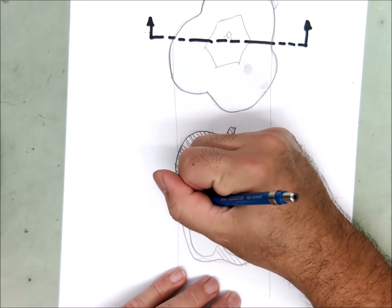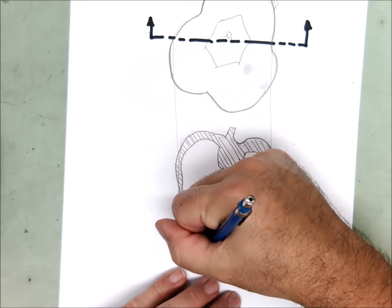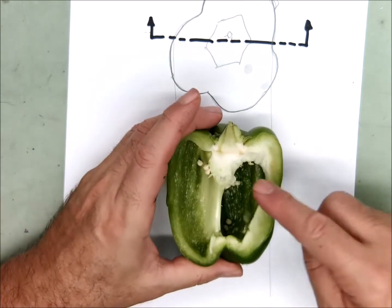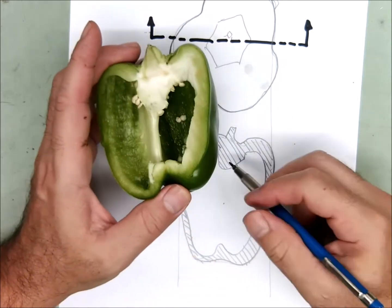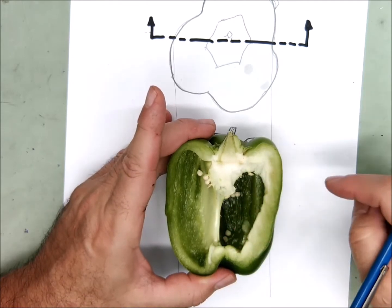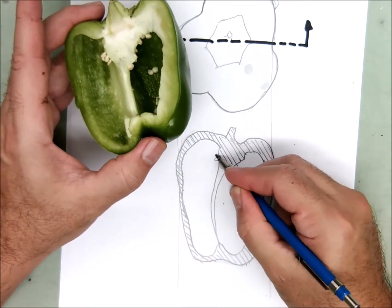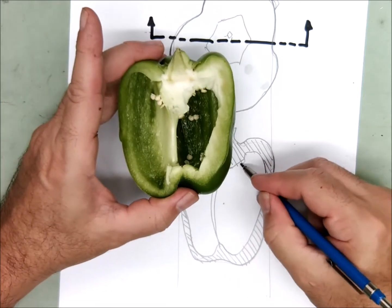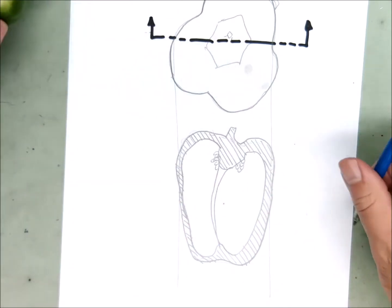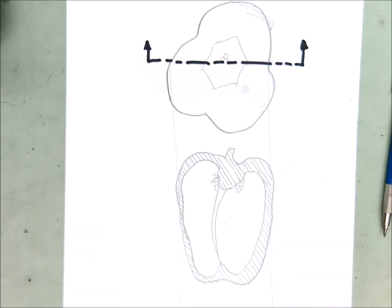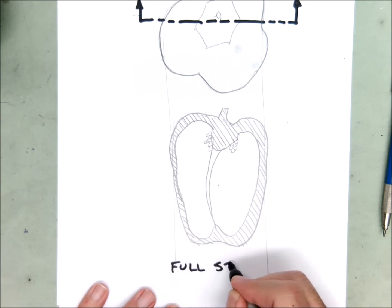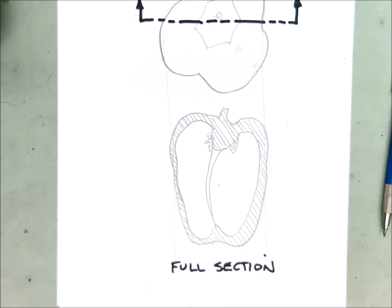All of this is solid so I'm going to section line it - that includes the stem and the walls. On mine the right wall is a lot thicker than the left wall and I try to show that in my section drawing. Thick wall, thin wall, hollow in the middle. There is a little ridge back here and because I can see it, I'm going to draw it. If you had some seeds and you can see them, you should draw them too. Once again, full section of our green pepper.